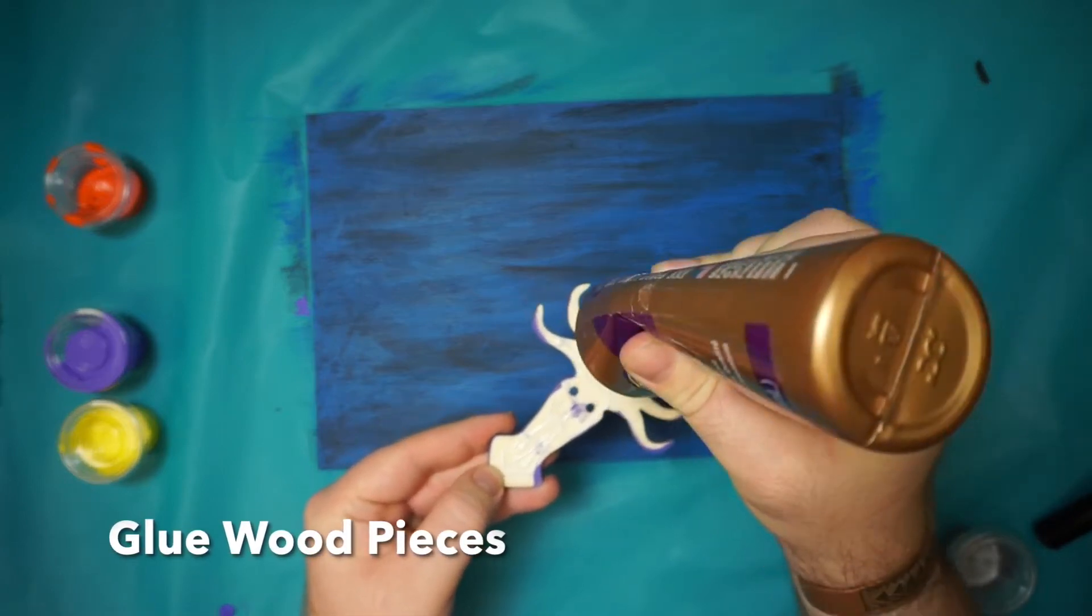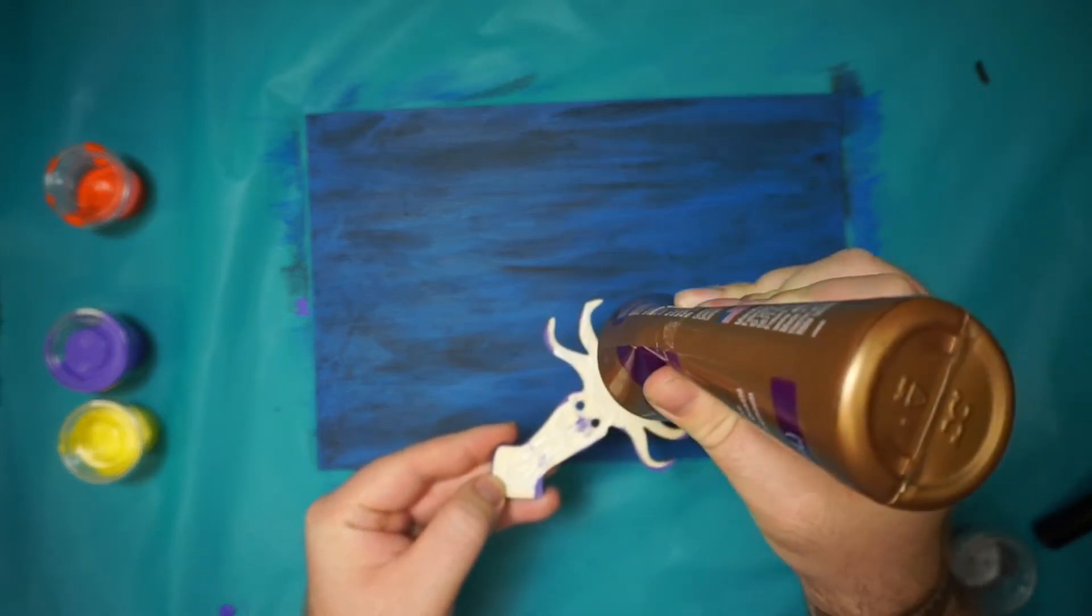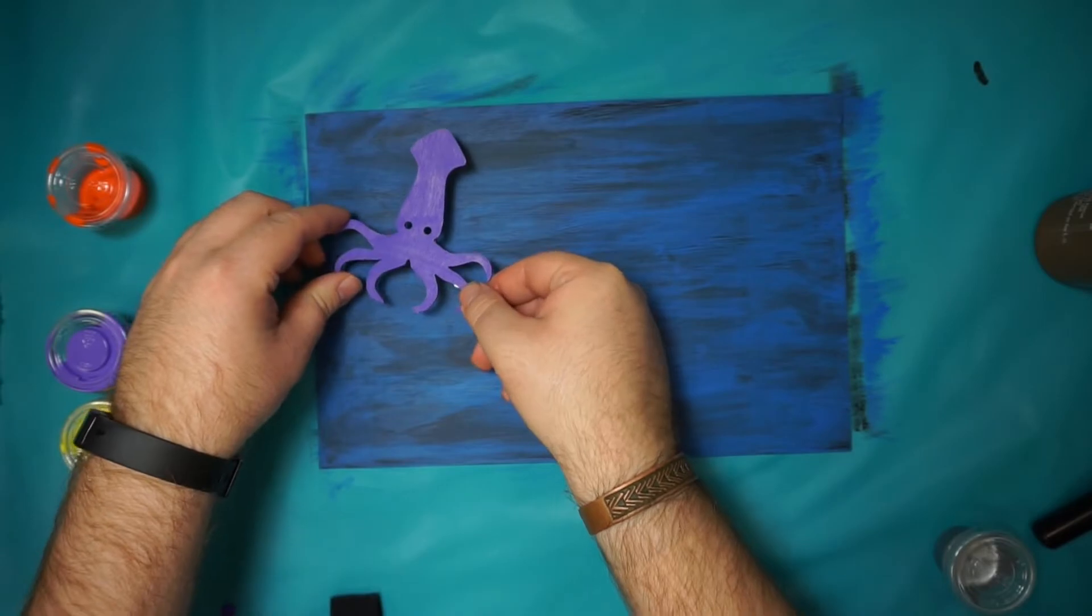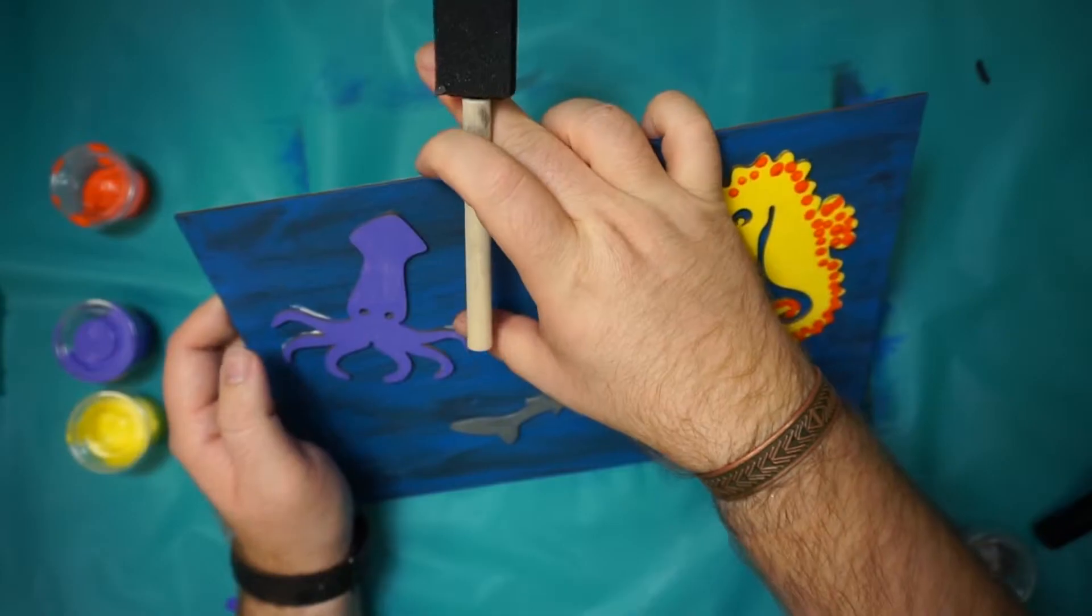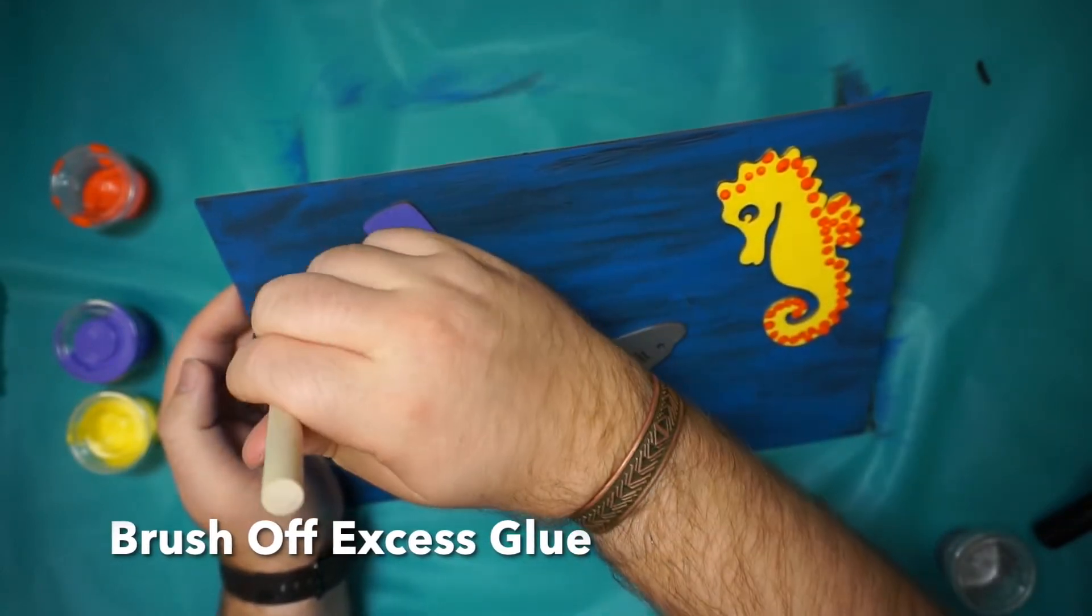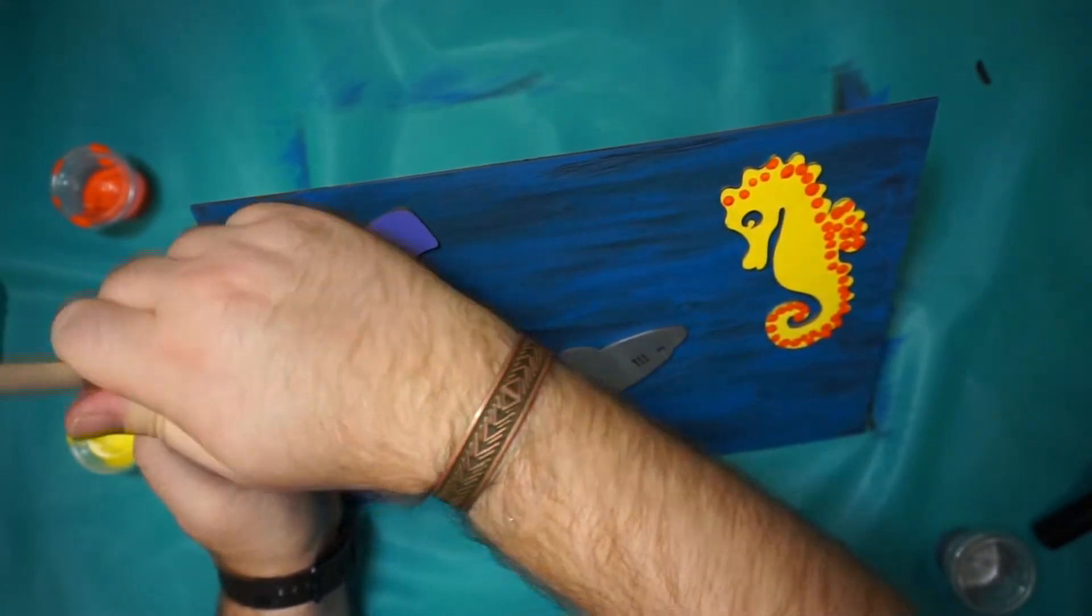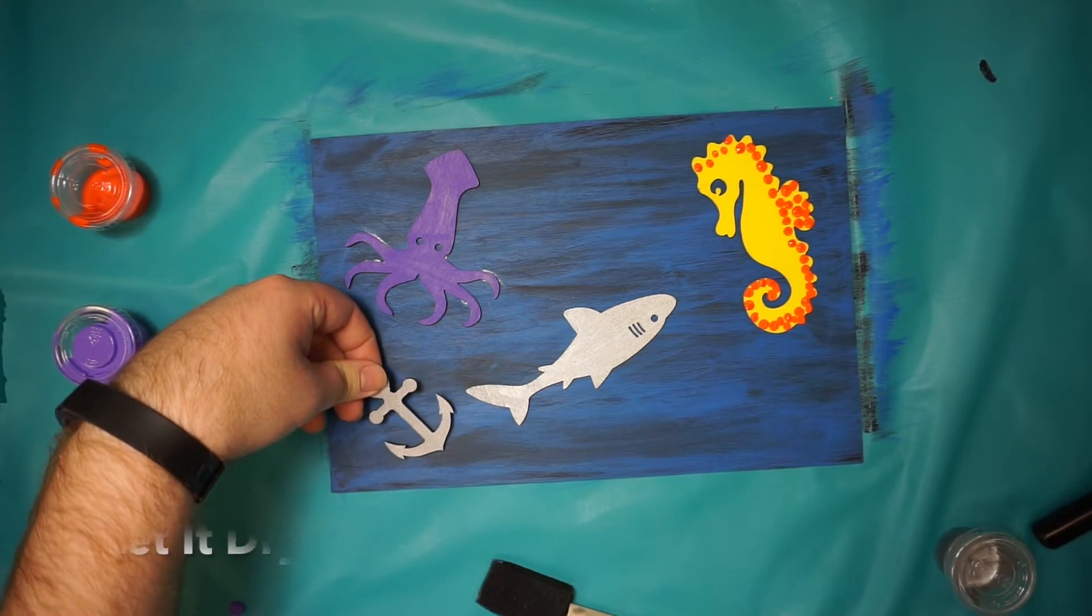Now we can glue these on. You can use tacky glue, wood glue, you might even try some Elmer's or some hot glue. It's up to you. If you have any excess, you can use your brush to brush away excess glue so you don't get it all over your picture.